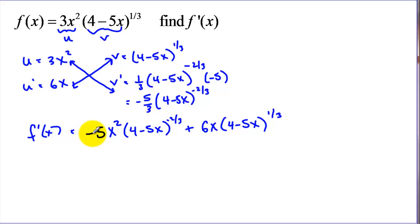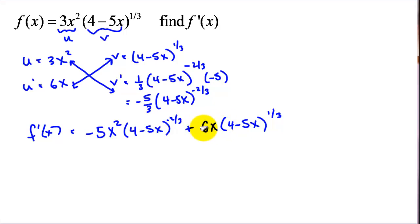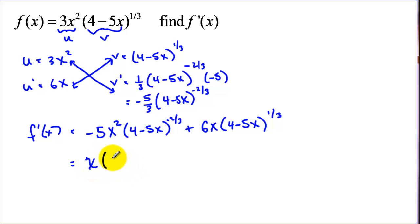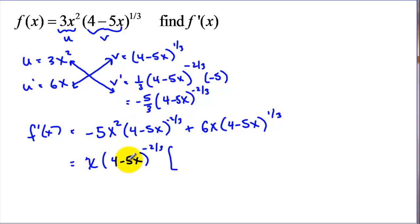But frequently we're going to be wanting to solve this for equal to zero, and we can't do it in this form. The easiest way would be to put it in factored form, so we're going to use what I call GCF factoring. We look at our coefficients — the negative five and the six — and we can factor out a one. We have x squared and x, so we can factor out x — the lowest exponent. And both have a 4 minus 5x in common, with our lowest exponent being the negative two thirds. Now we find our leftovers — what's left over from this expression if we factor out this GCF.